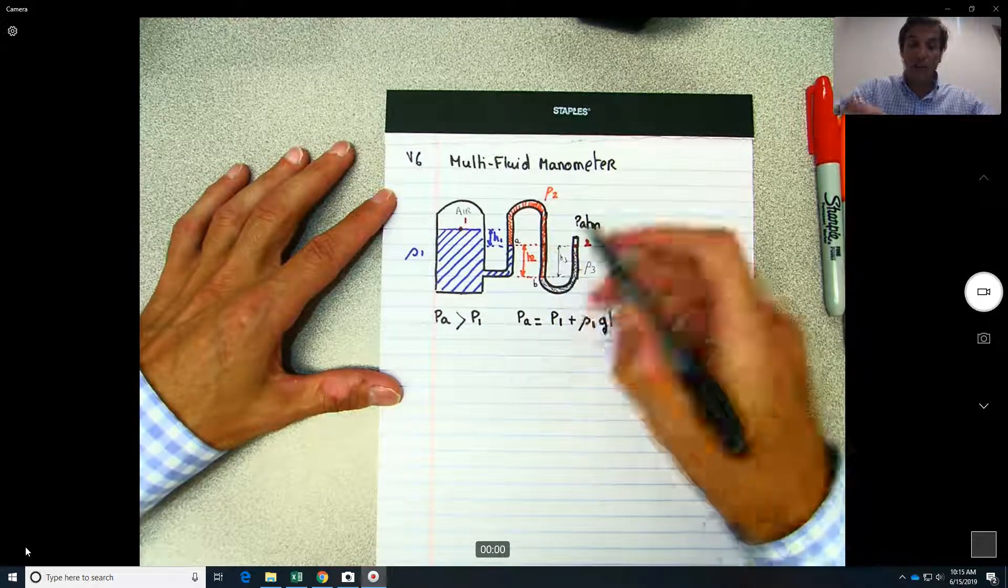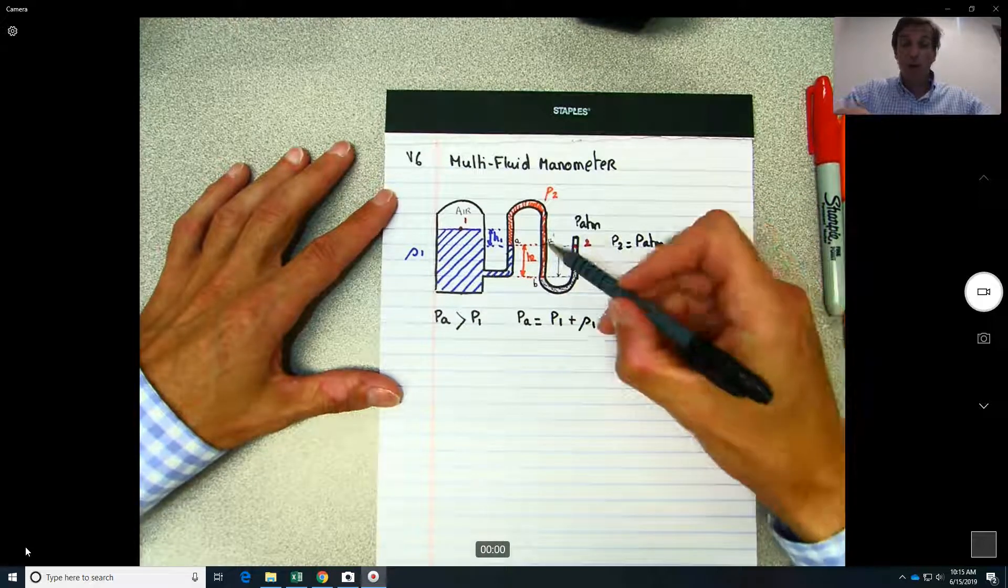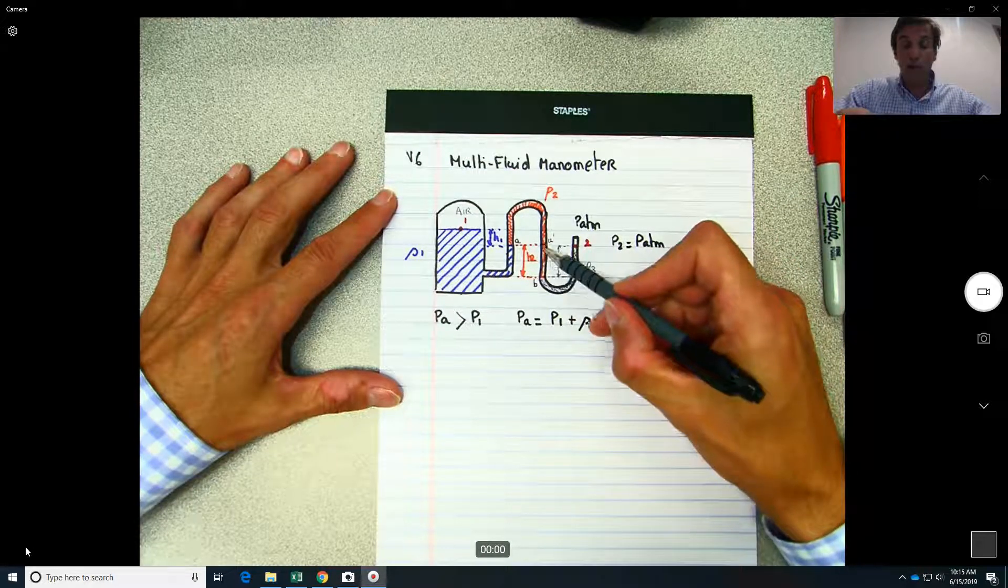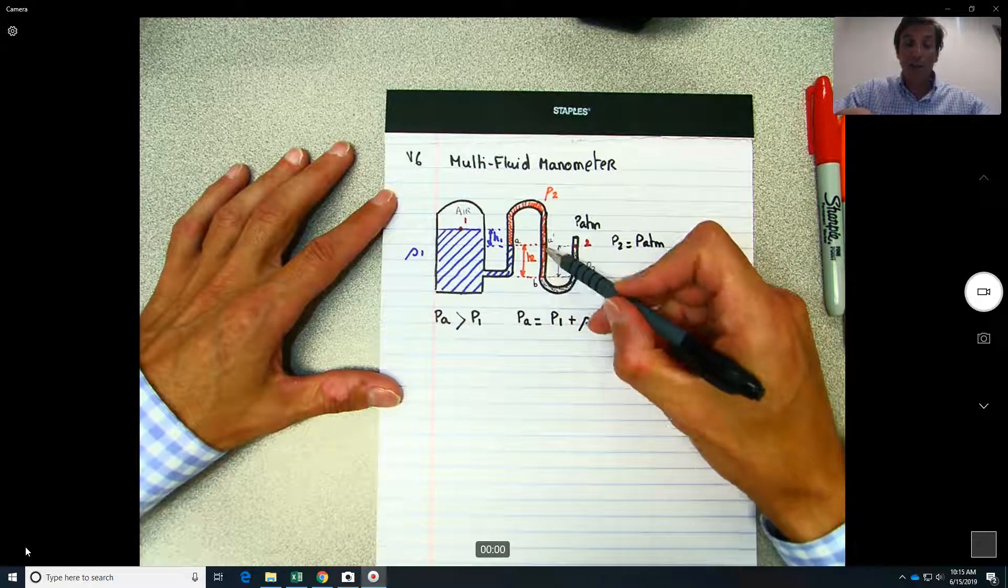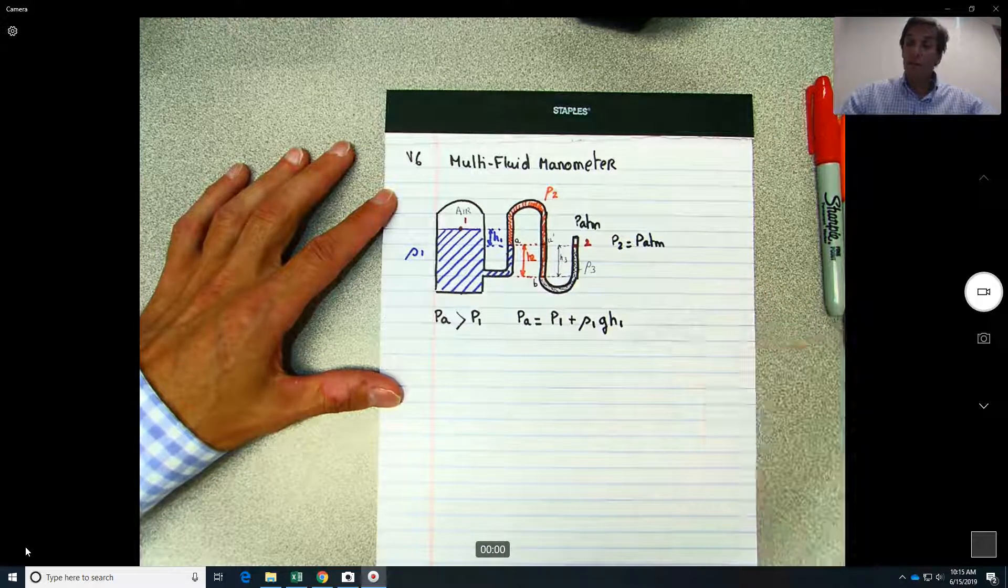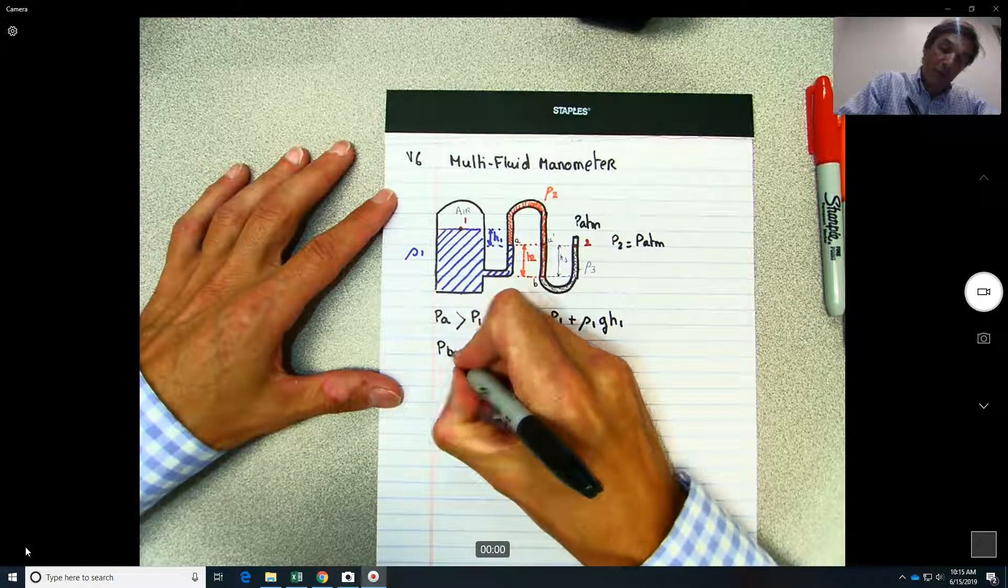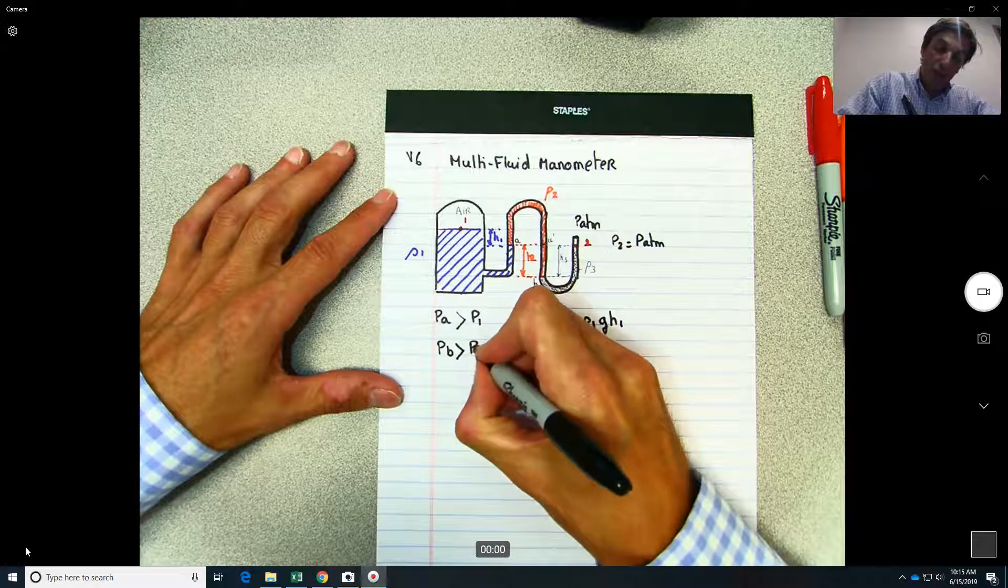So if you want, this would be our A prime. However, now you have more fluid over here, so that means that the column of fluid is going to create pressure over this point. So what does that mean? That means that the pressure at point B is higher than the pressure at point A.